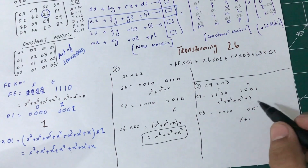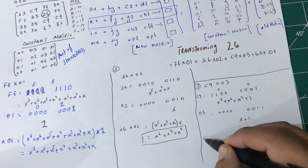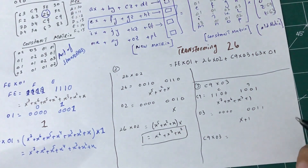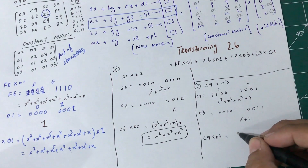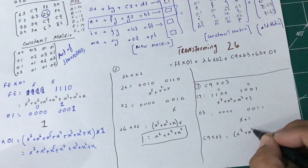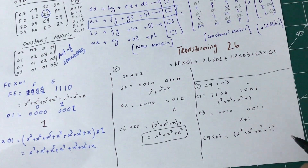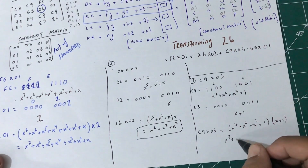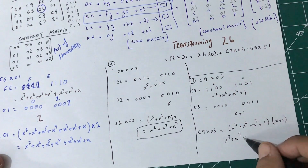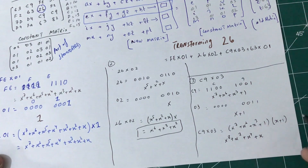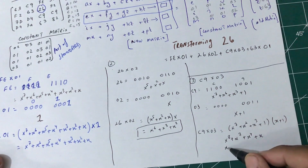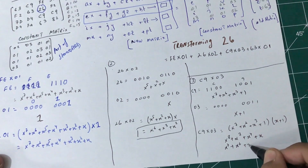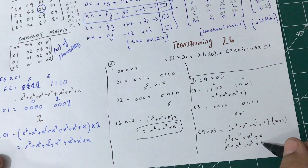So let's multiply C9 × 03: (x⁷ + x⁶ + x³ + 1) × (x + 1). Distributing x first gives: x⁸ + x⁷ + x⁴ + x. Then multiplying by 1 gives: x⁷ + x⁶ + x³ + 1.